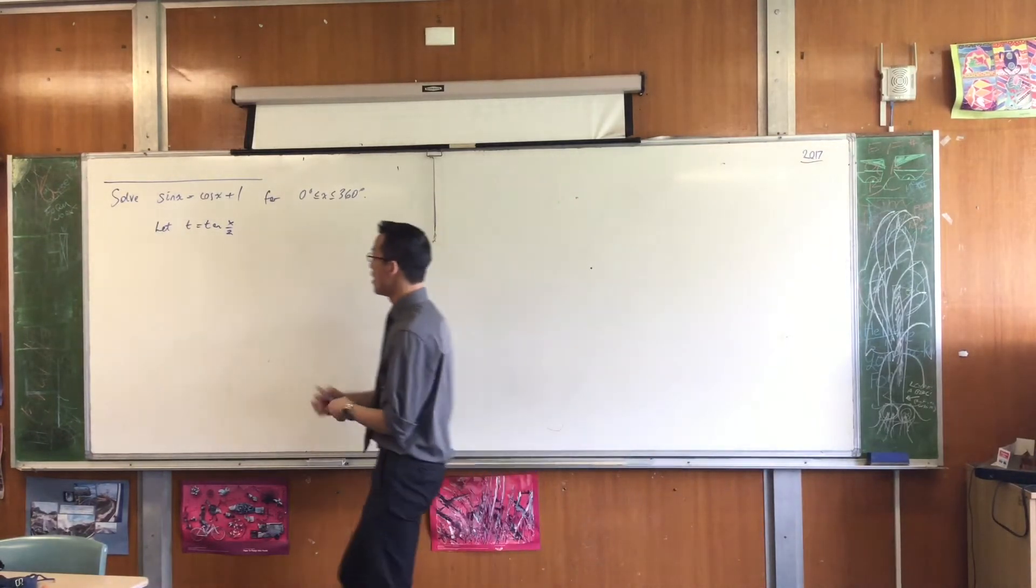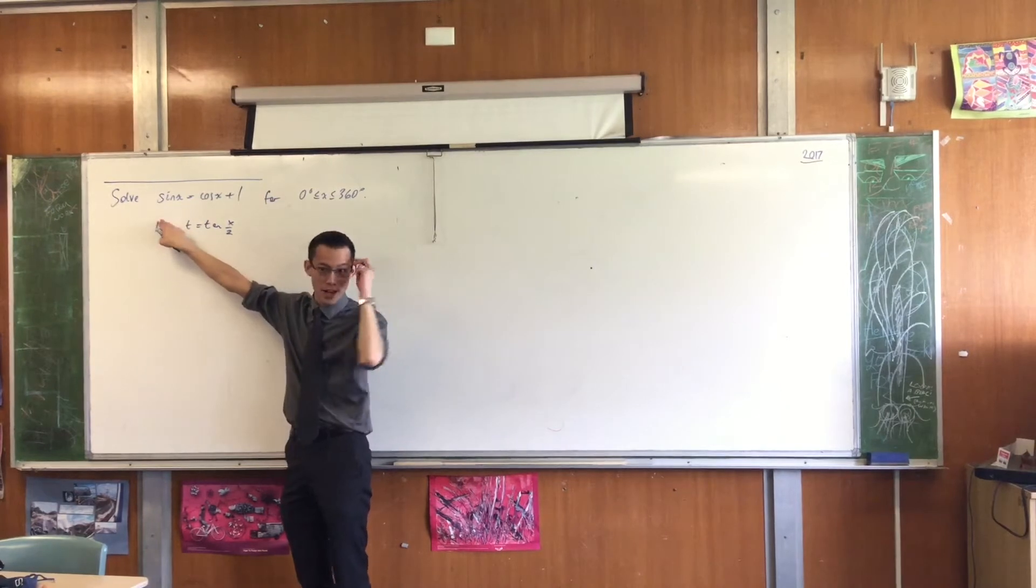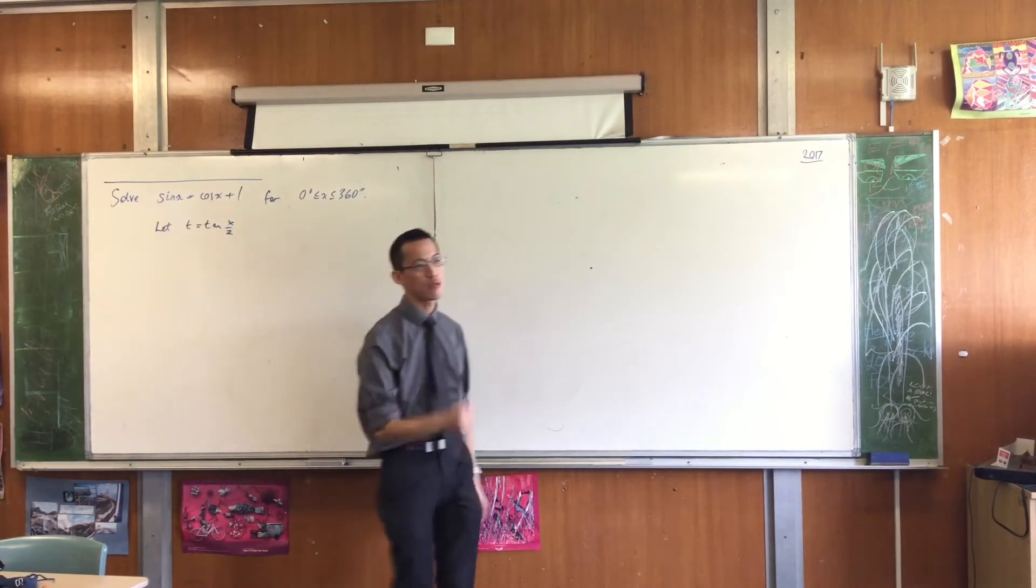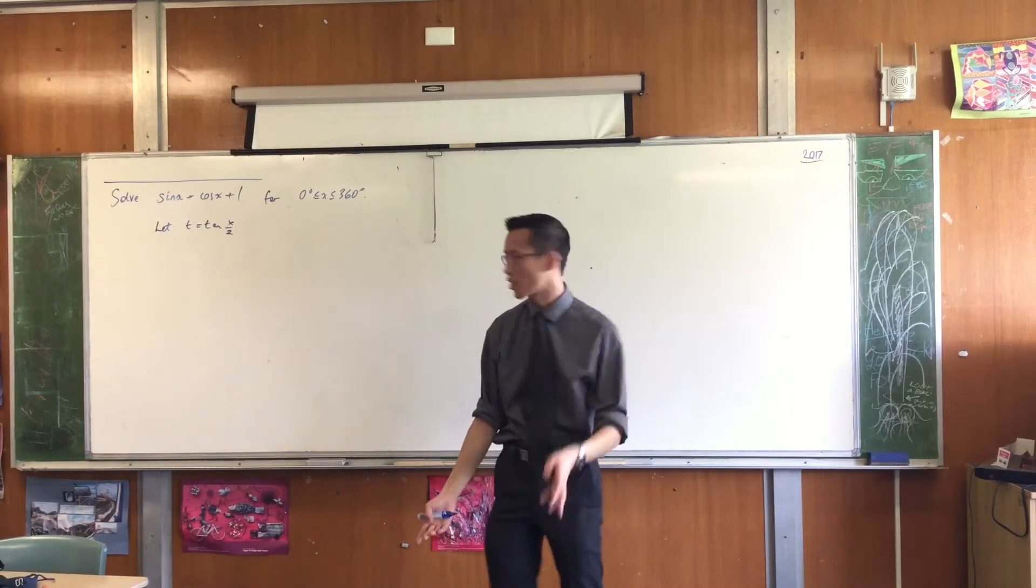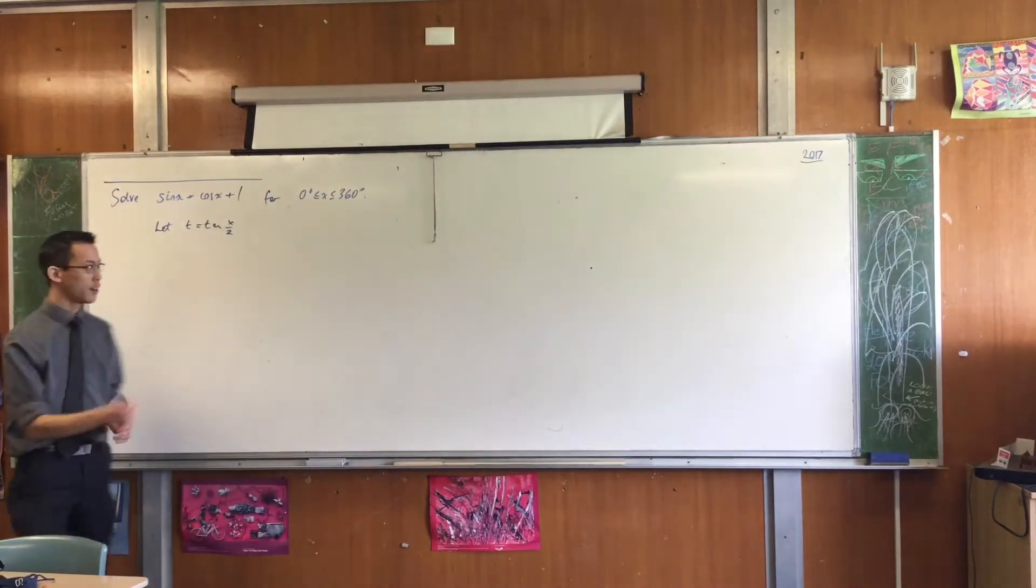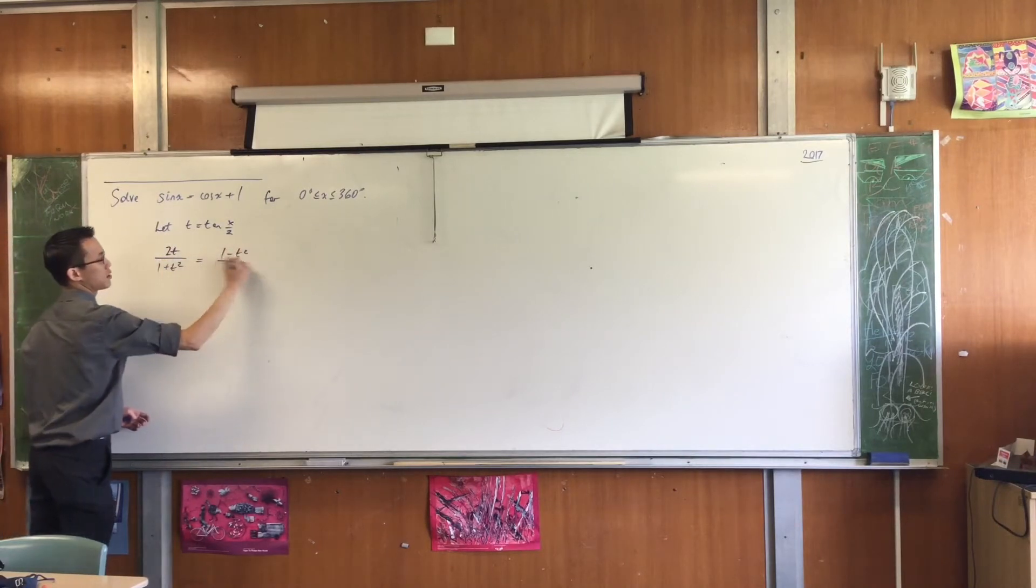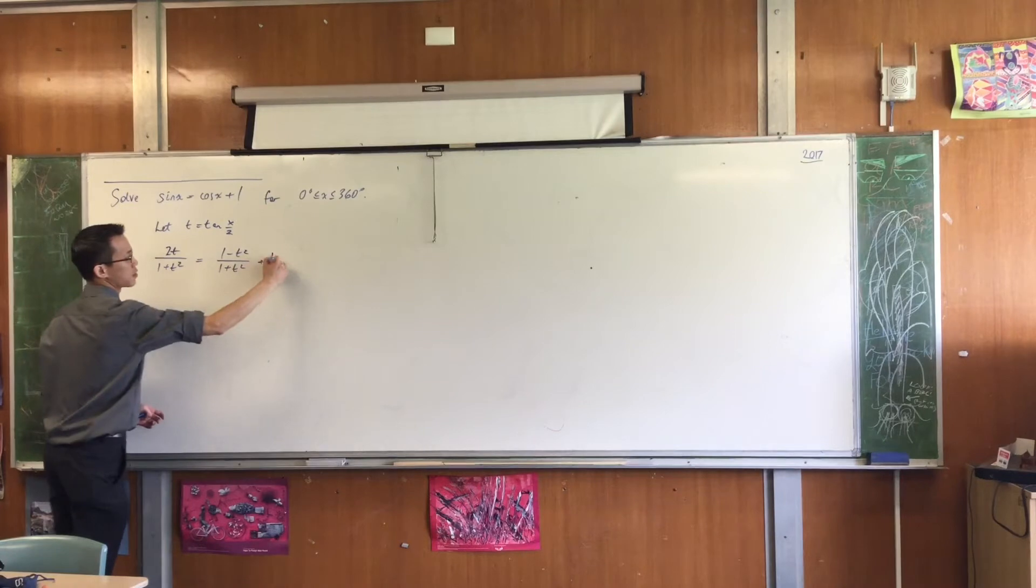Now that I have introduced it, I'm just going to go back into my mind or the piece of paper that I read three hours ago to remember what the t results are for sine and cosine. Hopefully if I know this well enough, I can say 2t over 1 plus t squared equals 1 minus t squared over 1 plus t squared plus 1.